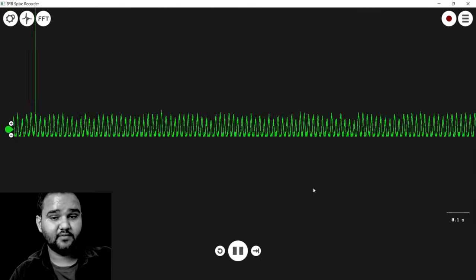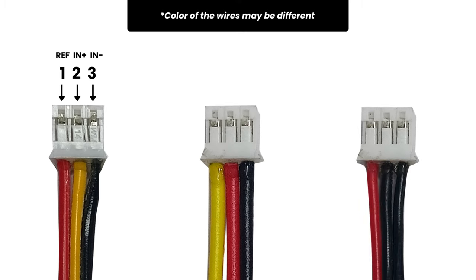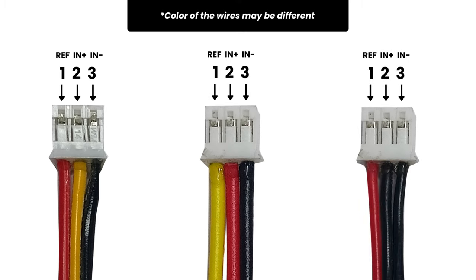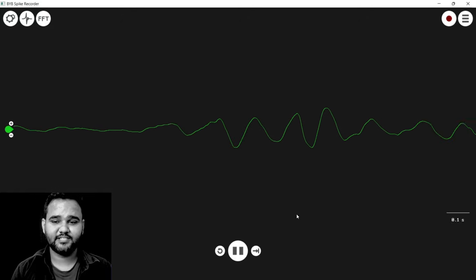Now the Arduino is connected, but we haven't connected the BioAmp ExG Pill to the Arduino yet. A basic connection diagram is currently shown on the screen — just make the connections and come back to this video. We have delivered three types of BioAmp cables since inception, all shown on screen. Connect IN+, IN−, and REF of the BioAmp to the IN+, IN−, and reference points as shown in the diagrams. Do not rely on cable color coding as it may differ.